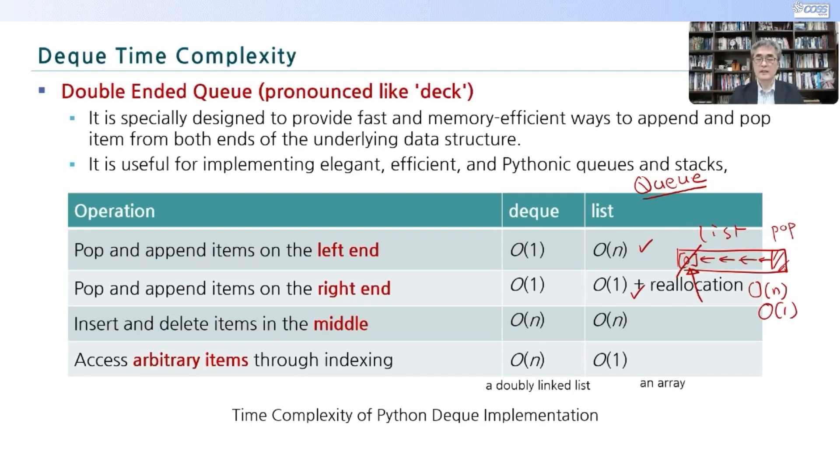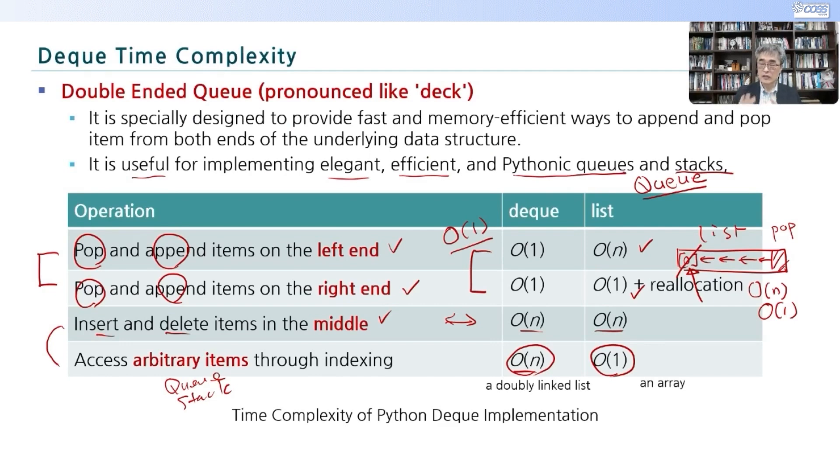Queue가 있었을때 list라고 하면 list sub zero를 이거를 제거할때는 이 element들을 다 하나씩 shift 해야 되기 때문에 시간이 걸렸죠. Big O of n이었습니다. 근데 이 끝에 element를 pop 할 때는 속도가 상당히 빨랐잖아요. Big O of one이었습니다. 데크에서는 이 두 operation이 똑같이 constant입니다. 한번에 operation으로 left-나 right-end에 pop도 할 수 있고 append도 할 수 있습니다. 근데 이제 밑에 보면 이런 과정은 같구요. 그 다음에 arbitrary item 인덱싱해서 access 할 때는 여기는 big O of n이 걸리고 여기는 constant time이 걸립니다. 그러면 list도 여기 좋은 점이 있지 않느냐 그렇게 여러분들 물을 수 있습니다. 그러나 우리가 이 두 operation은 잘 사용하지 않거든요. 어디서요? queue나 stack에서 이 두 operation을 queue나 stack에서는 가장 많이 사용하죠. 결론적으로요. It is useful for implementing elegant efficient Python의 queue나 stack. Queue나 stack을 구현하고 싶을 때는 list를 사용하지 않고 데크를 사용하면 훨씬 더 편한거죠.